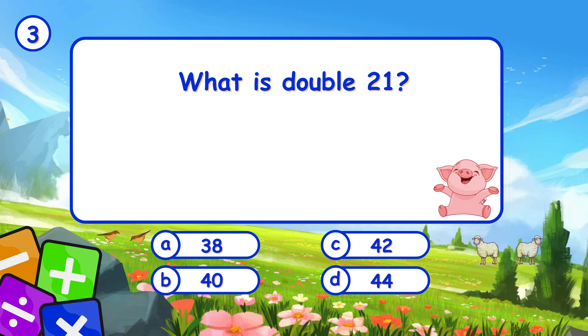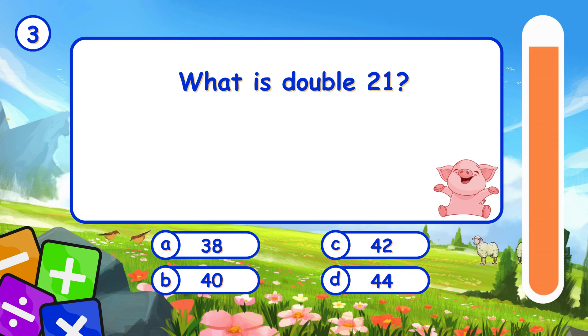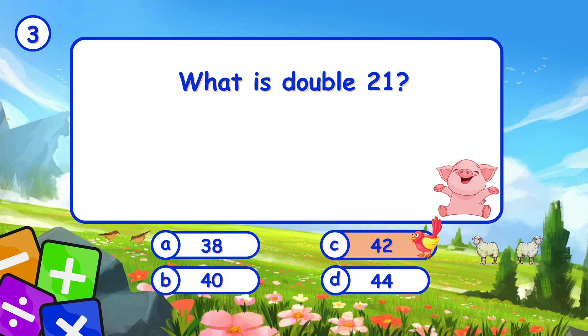What is double of 21? It's C, 42. Double of 21 is 42.